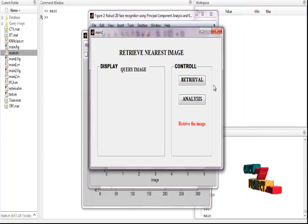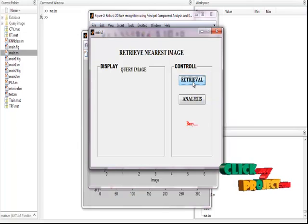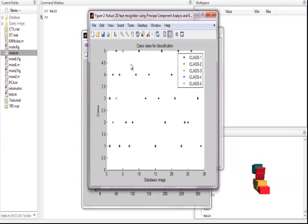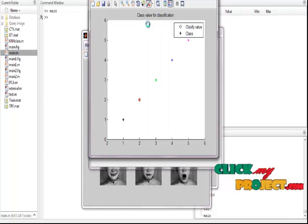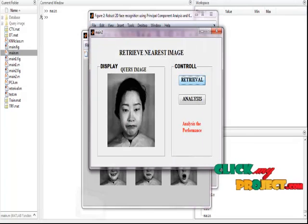Now, this is the final window. In that final window, we click the retrieval button to retrieve the face recognition process of our input image. After clicking retrieval, we show the class value for classification graph, showing the classified value and the classes of the process.